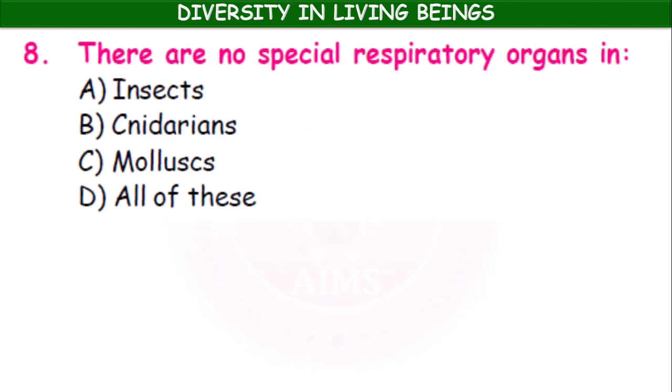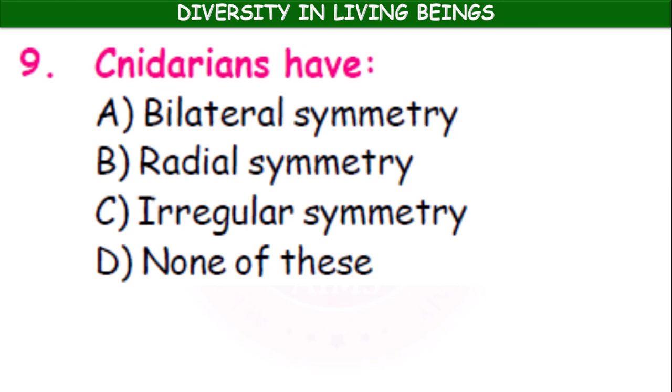There are no special respiratory organs in cnidarians. The symmetry of cnidarians is radial symmetry. Which of these has no skeleton whatsoever — butterfly, sponge, starfish, or jellyfish? It is the jellyfish — also a cnidarian.